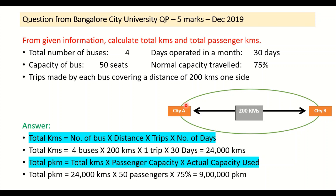Please look at the first video in the service costing series for reference. If we put up the values: total kilometers = number of buses (4) × distance traveled (200 km) × trips (1, because no other information is given and it is not a round trip — if it were a round trip, we would take 2) × number of days (30).